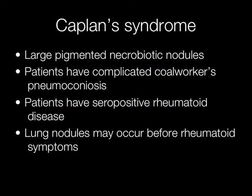In Kaplan's syndrome, there are large pigmented necrobiotic nodules. The patients have complicated Coal Workers' Pneumoconiosis and have seropositive rheumatoid disease. The lung nodules may occur before the rheumatoid symptoms develop.